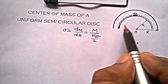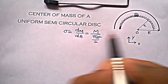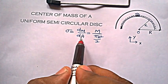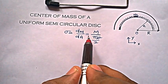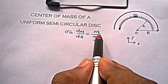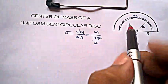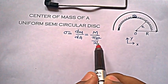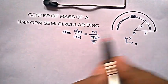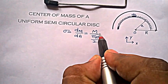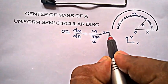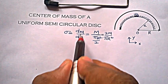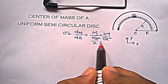Since the mass is distributed uniformly over the surface, we choose surface mass density, which is dm over dA, or mass per unit area. This is total mass by the area of the half disc, which is πr²/2, since the total disc is πr². So this can also be written as 2m by πr². So sigma is dm/dA = 2m/πr².